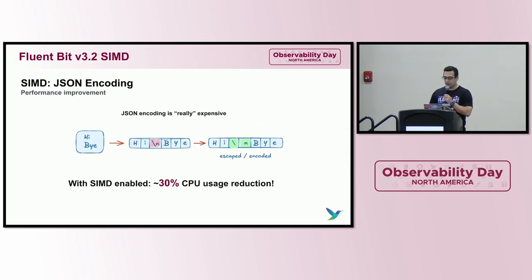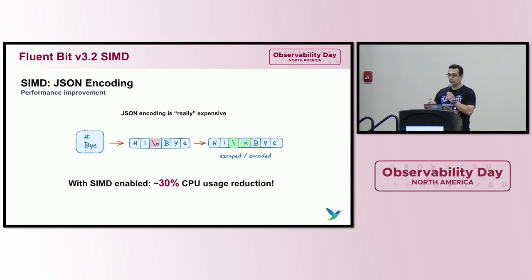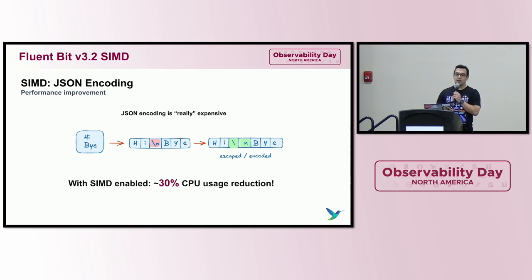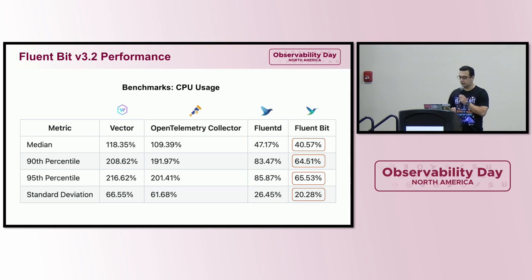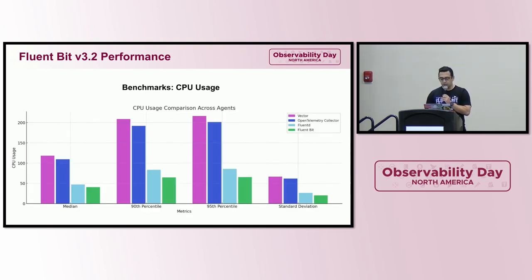Working on optimizations, we implemented SIMD support in FluentBit. One of the most expensive operations when processing data is encoding JSON — so we implemented SIMD support and now reduce encoding cost by around 30% in JSON. We also did benchmarks against Vector and OpenTelemetry, and FluentBit got really good results where the median and standard deviation are always lower. We'll share more details in the maintainer track.